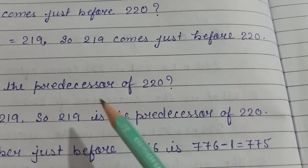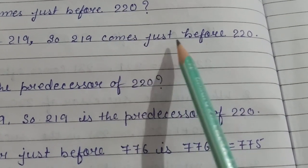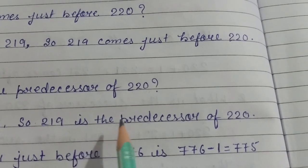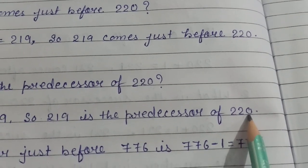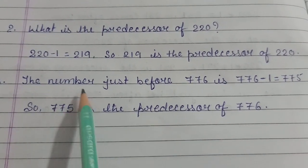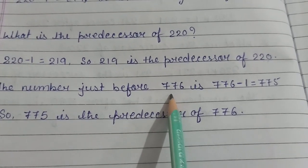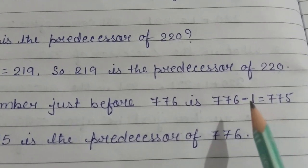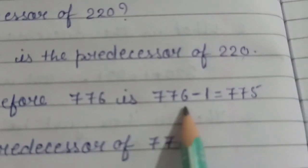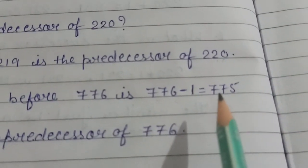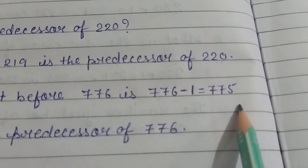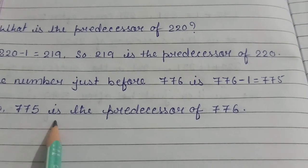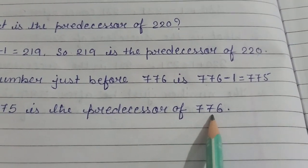Now children, you can see here: 219 comes just before 220, and 219 is also the predecessor of 220. The number just before 776 — again we will subtract 1 from 776, so we will get 775. So 775 is the predecessor of 776.